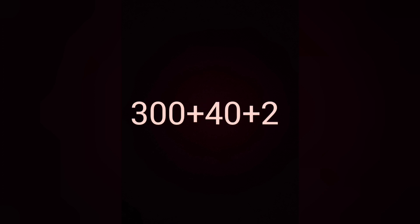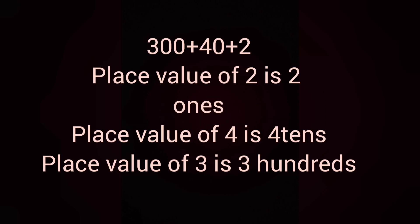Now, can you expand 342 and answer? Yes, it is 300 plus 40 plus 2, because the place value of 2 is 2 ones, place value of 4 is 4 tens, and place value of 3 is 3 hundreds. So if we add all 3 place values, the number will be 342. 300 plus 40 plus 2 is the expanded form of 342.